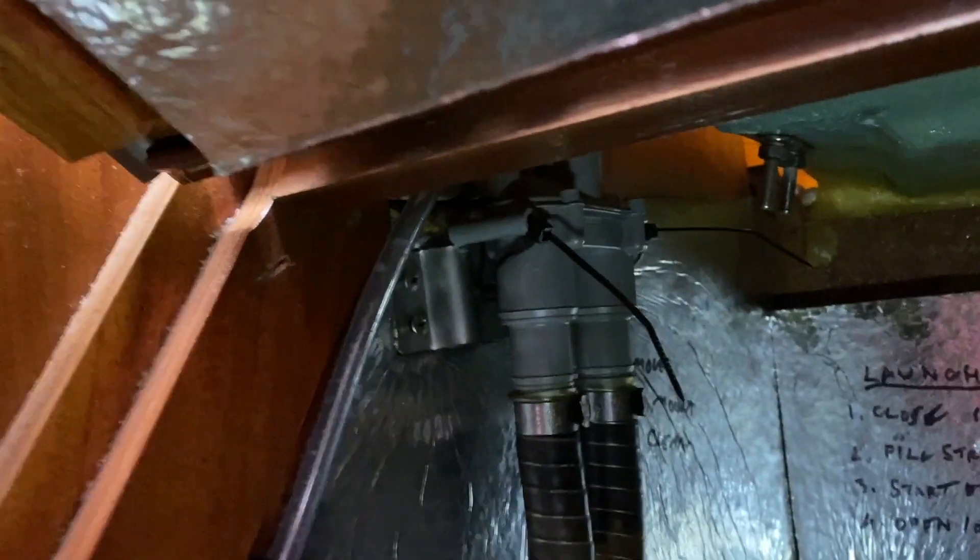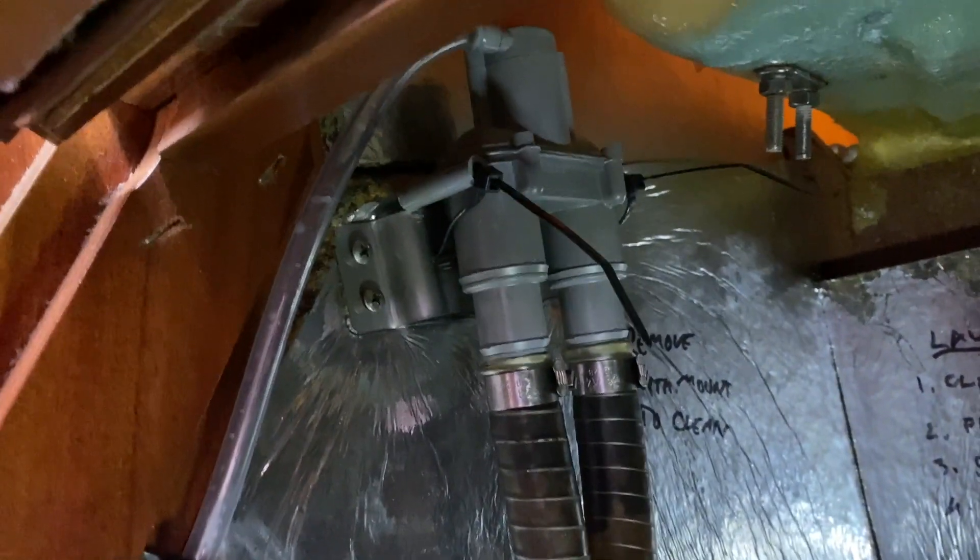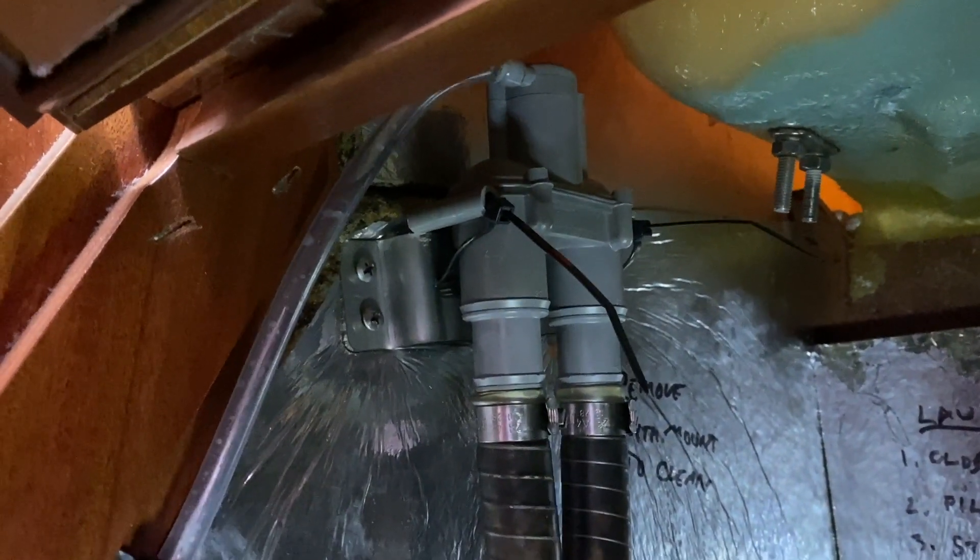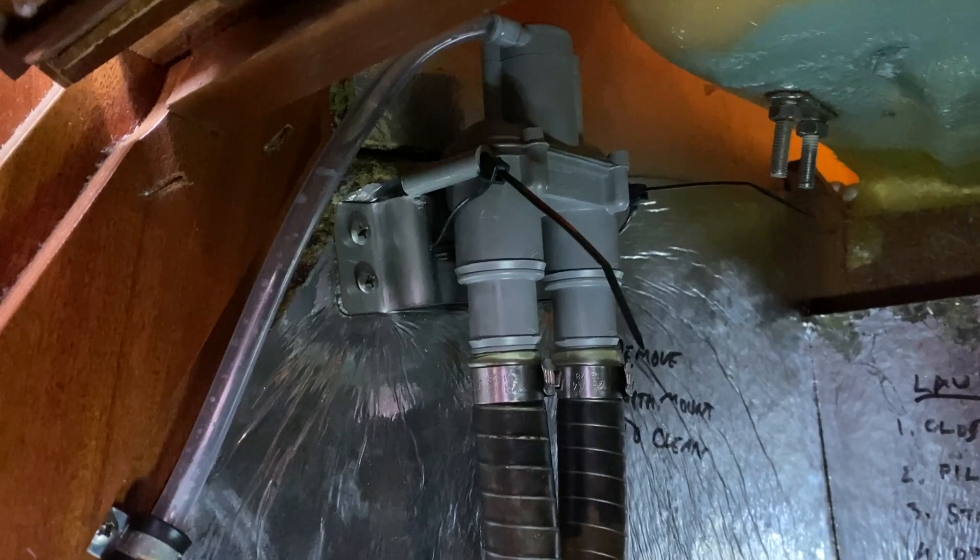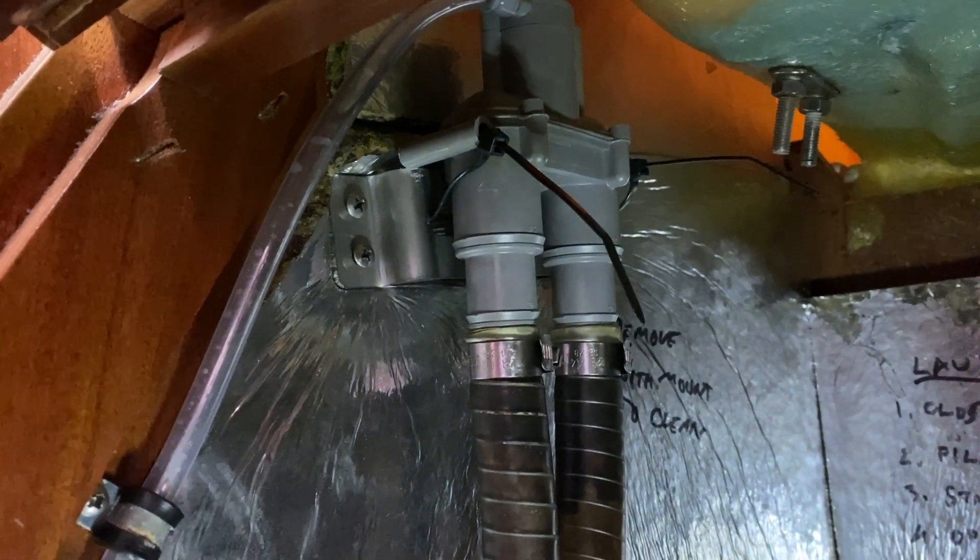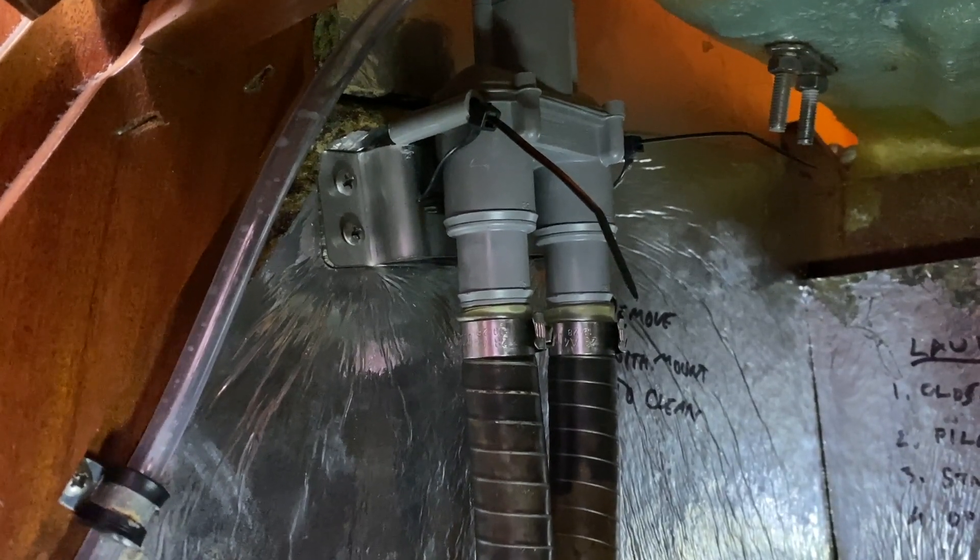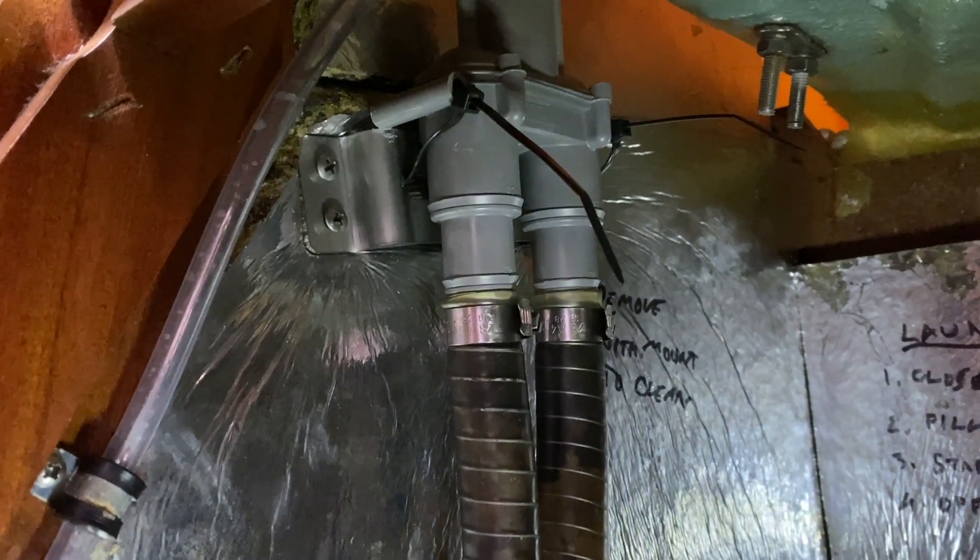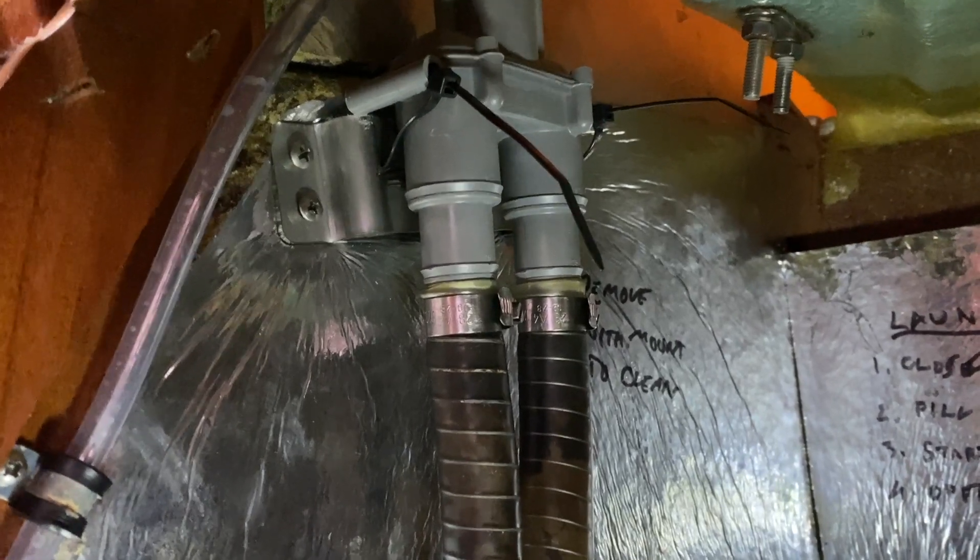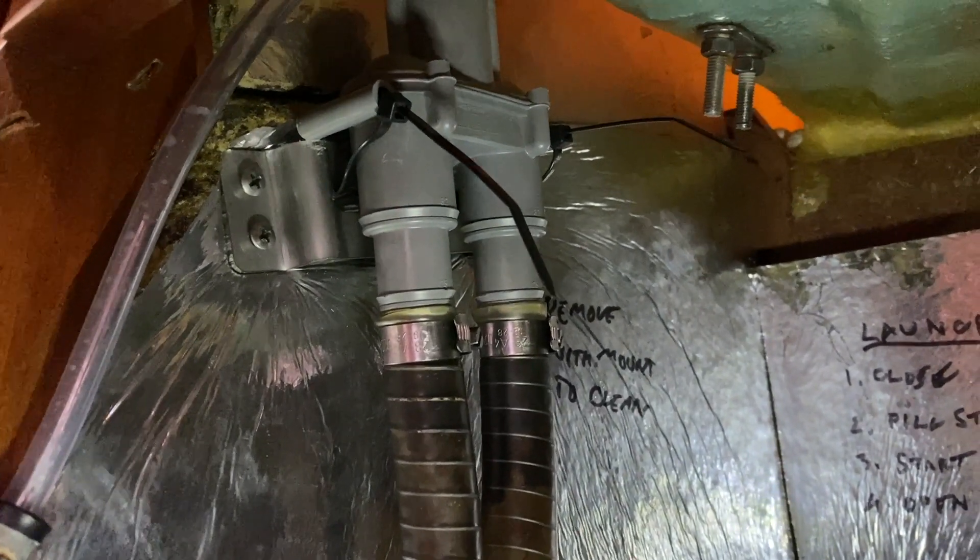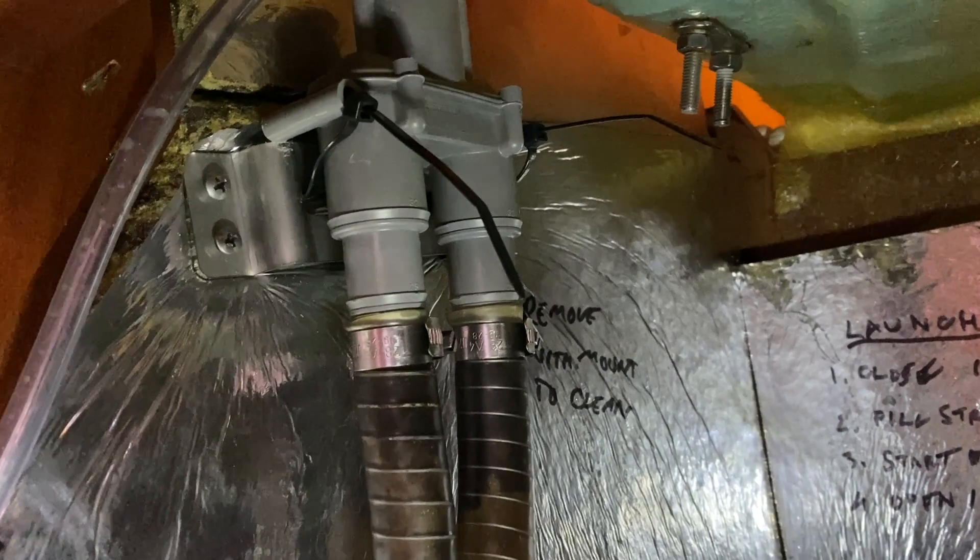Now my anti-siphon valve is a Vetus one and it's original to the boat, the type which has a little valve inside it. There's basically two types of these. There's my type which has the valve inside, and there's another type which has a little pipe that drains to the outside and drips as the engine is running if the anti-siphon valve is working properly. That's really the better type because you can see all the time that it's working. Mine is the inferior type with the little valve inside which needs to be maintained.